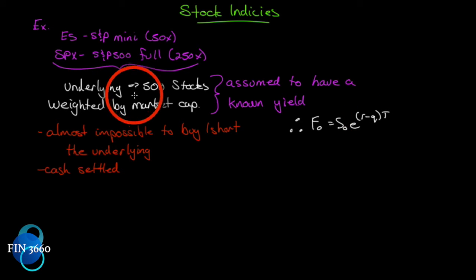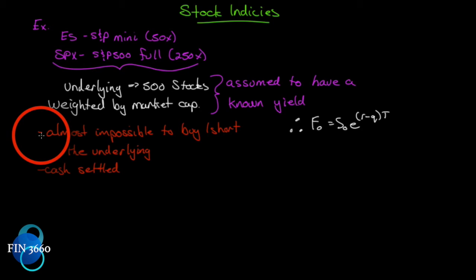There is a problem with index arbitrage, however: it is almost impossible to buy or short the underlying. If you see a mispricing, you have to buy or sell 500 stocks in different proportions — some in fractional proportions — unless you scale up to whole numbers. You're talking about big dollars, big trades, and you have to be fast. That's really program trading.